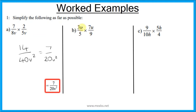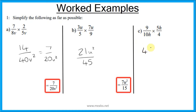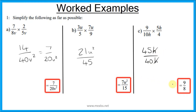For part b: 3u times 7u, which simplifies to 7u squared over 15. For example c, multiply the numerators to get 45h and multiply the denominators to get 40h. We can divide both by h, which cancels it off, and then 45 and 40 can both be divided to get 9 over 8, which can also be written as 1 and 1 eighth.